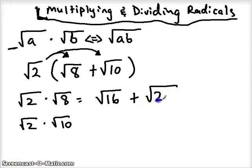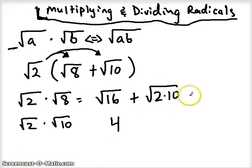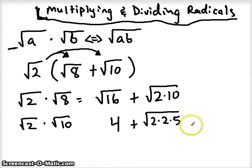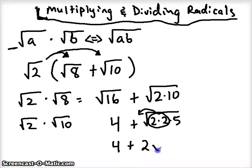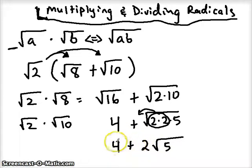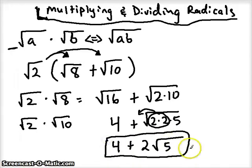So we're adding the square root of 16 to the square root of 2 times 10. The square root of 16 is 4. If I simplify and write out all my prime factors, I get 2 times 2 times 5, which is the same as 20. I have a pair, and since I'm taking a square root, I can take a pair out. So one 2 comes out, and I'm left with the square root of 5. That gives us 4 plus 2 times the square root of 5. I cannot add these two together because they don't have the same radicand, so this is my final simplified answer.